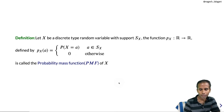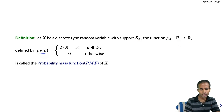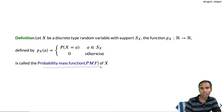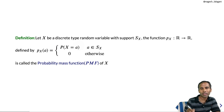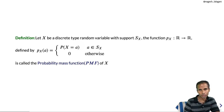Definition: Let X be a discrete type random variable with support S_X. Then the function P_X from ℝ to ℝ is defined as: P_X(a) equals the probability of X equal to a for a in S_X, and 0 otherwise. This is called the probability mass function of the random variable X, or simply the PMF. Knowing this PMF means knowing all probabilities over S_X, which is what we need to determine the complete probability distribution in the discrete case.